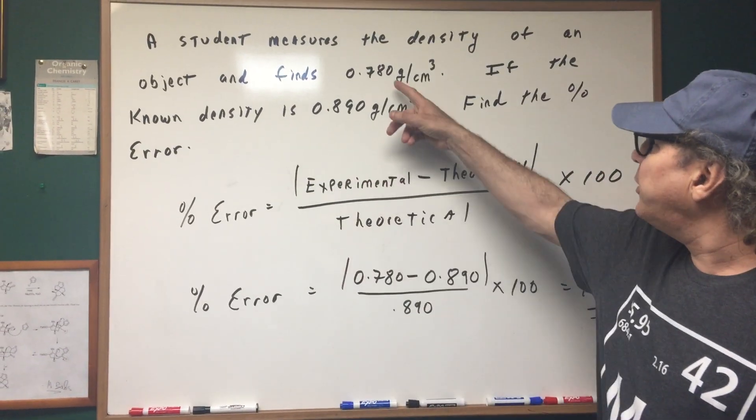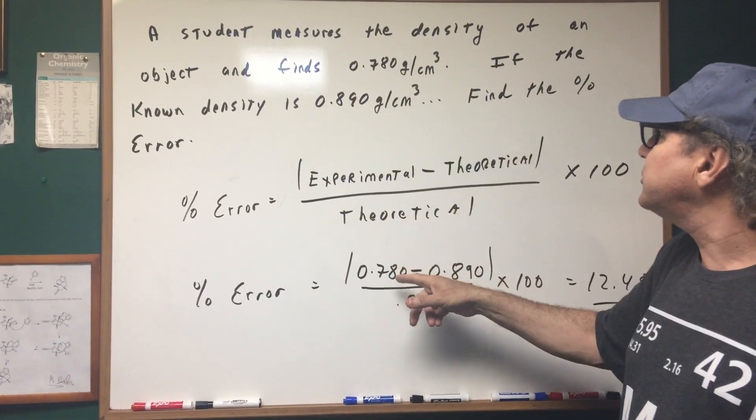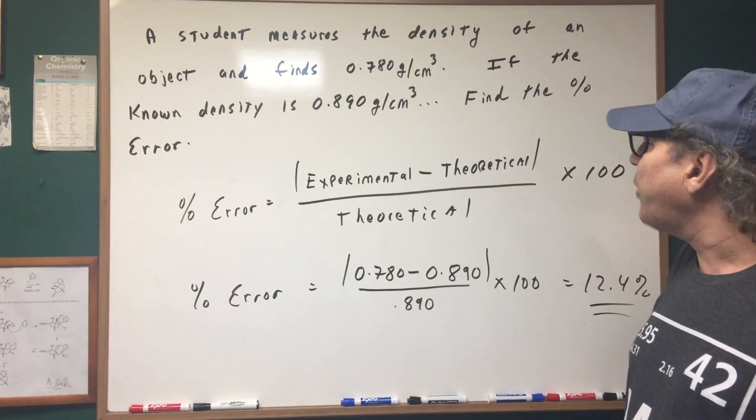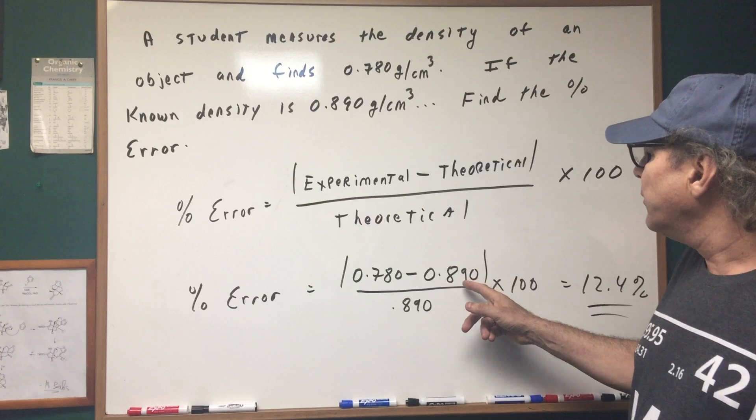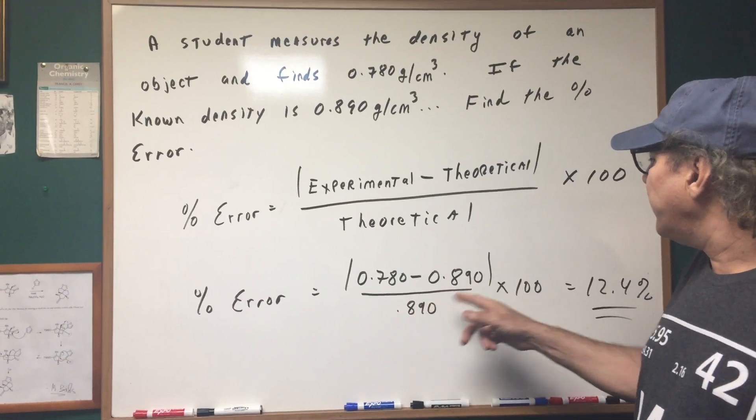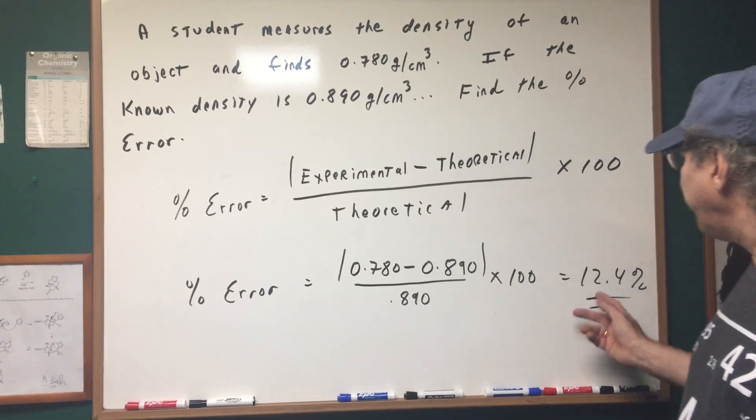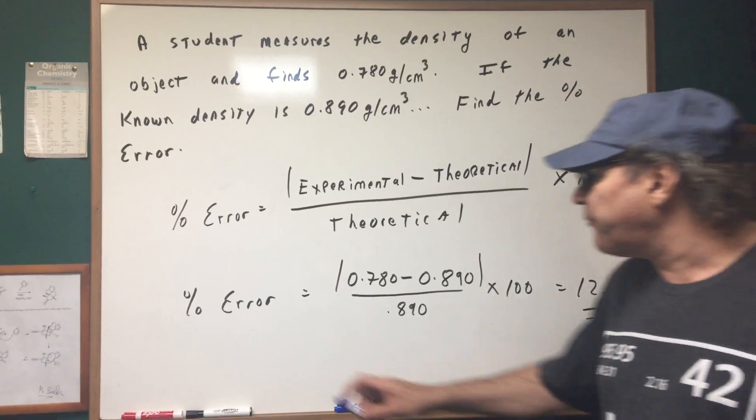So what we did is we put in the experimental that she finds is 0.780, we know the theoretical which was the known 0.890, divided by 0.890 times 100. Usually for the test they'll just make you set it up and that should be good enough. If you finished it out it was 12.4%.